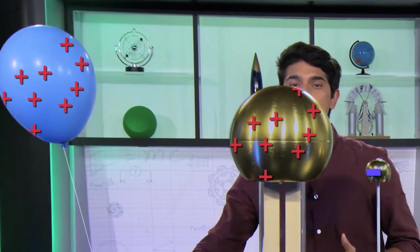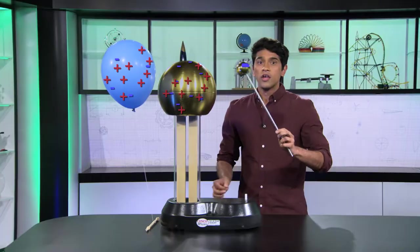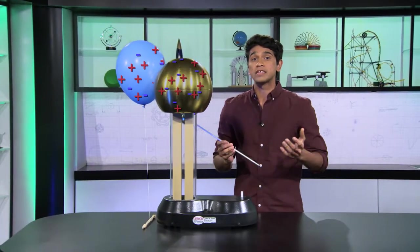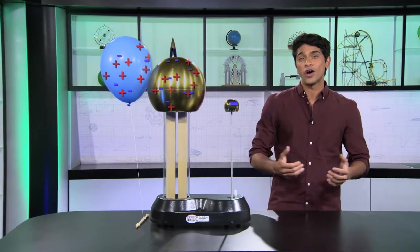Now here's the really important part. The closer I move the balloon to the bell, the bigger the force. And the farther I move the balloon, the weaker the force. Look at what happens when I turn off the generator and discharge the bell. The bell stops repelling the balloon because it's lost its positive charge. And that's Coulomb's Law in action.